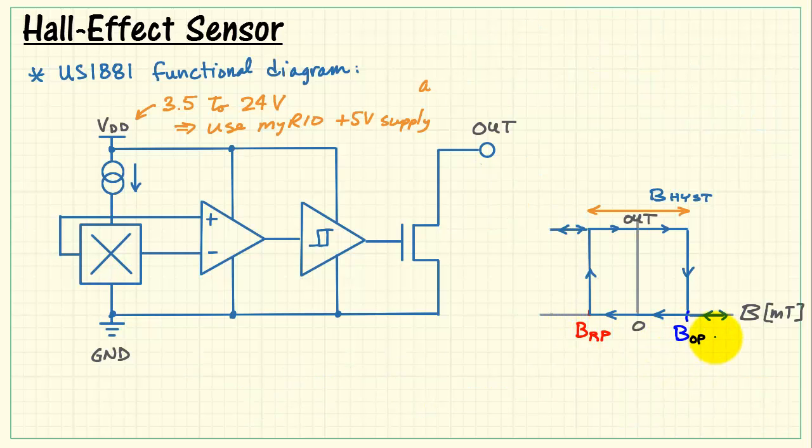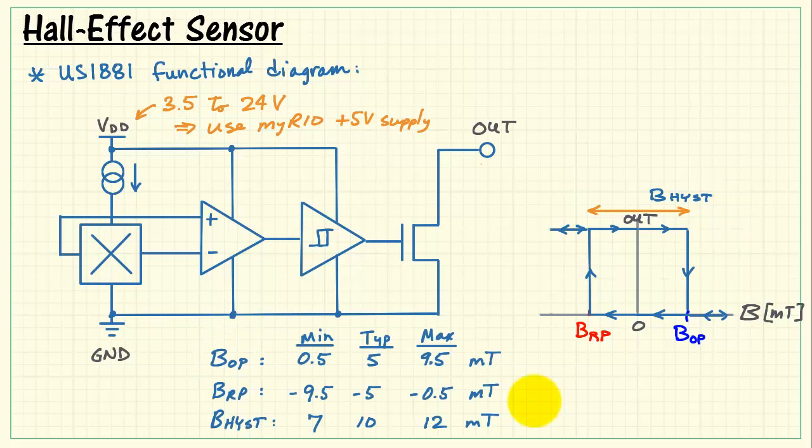All right, let's go back to the US1881 specifically and take a look at some numerical values for these specifications. Here I have typical values in the center for operating point and release point, as well as the hysteresis values. You notice that the values can vary considerably from device to device.